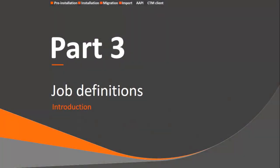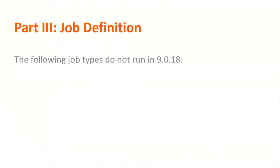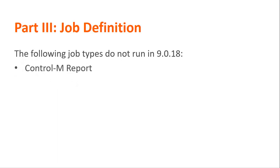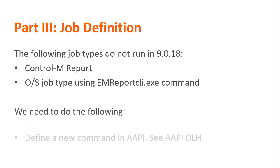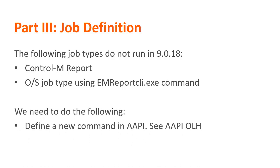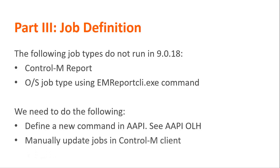Part three: job definitions. In Control-M client, the following job types no longer run: Control-M report and OS jobs running the EM report CLI command. These jobs need to be updated by doing the following: define a new command in Automation API — ensure that you have already installed and configured Automation API before you start. For more information, see Automation API online help. Then manually update the jobs in Control-M client with the new command defined in Automation API.